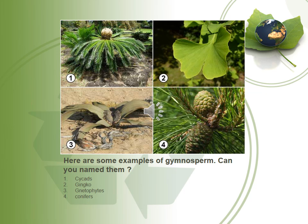Here are some examples of the four types of gymnosperms. Number one, we have cycads. Number two, a ginkgo leaf. Number three, we have gnetophytes. And number four, we have conifers, which are pine-like trees.